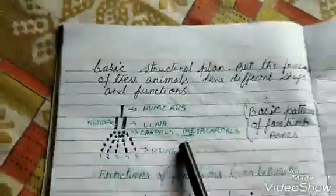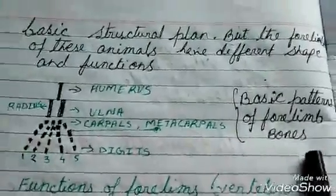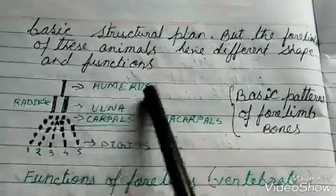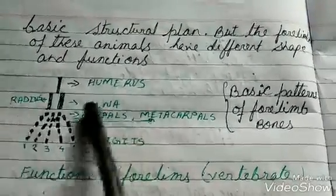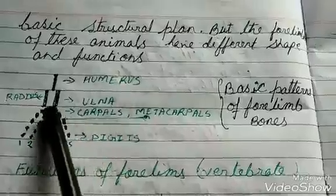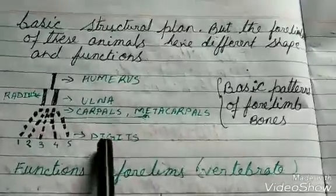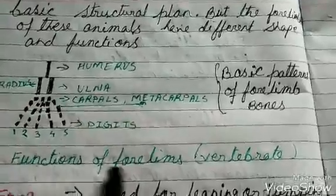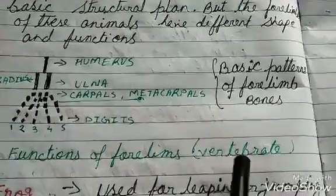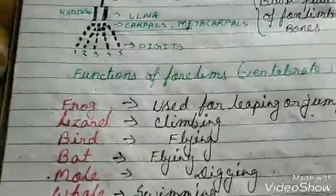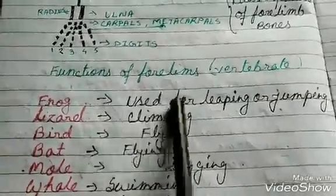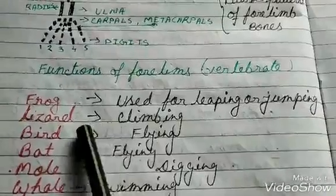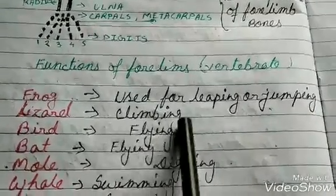Here we have the basic pattern of four limbs. The bone structure is shown here. All these vertebrates have the humerus, radius, and ulna, carpals in the wrist, and metacarpals.